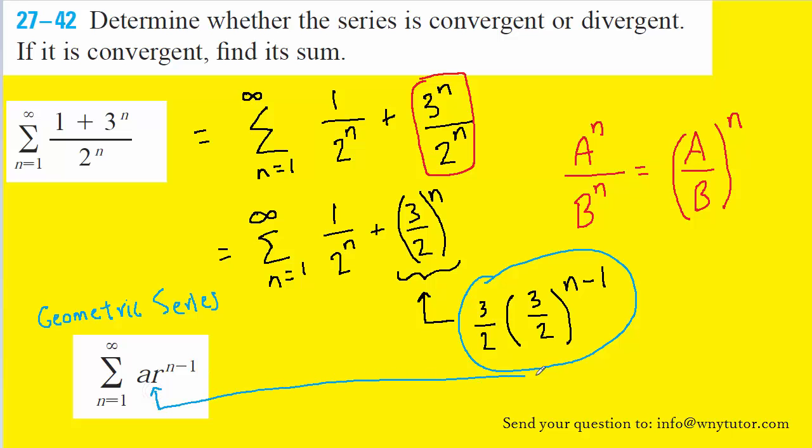And the reason that's important is because if the absolute value of r is greater than or equal to 1, then this geometric series would indeed be divergent.